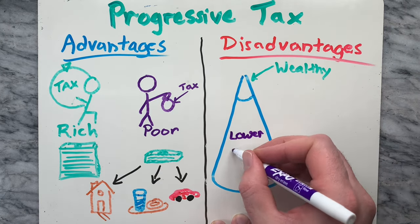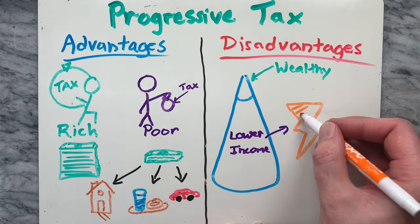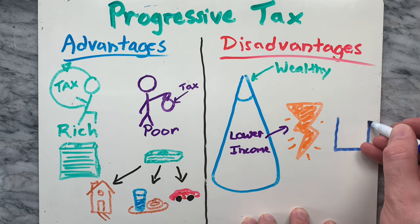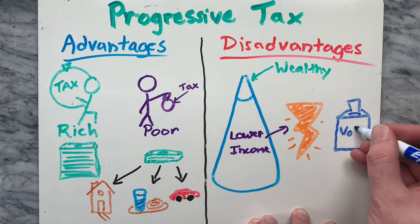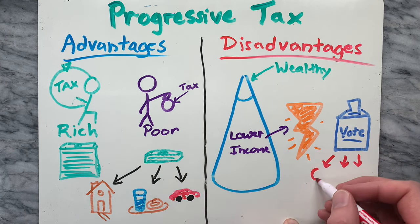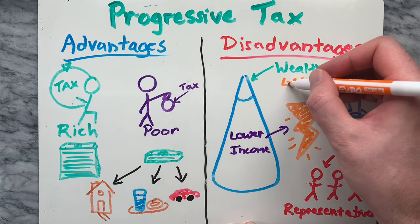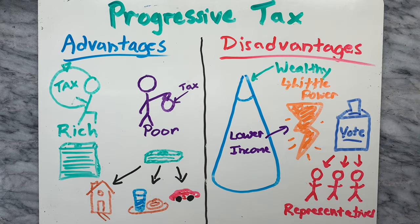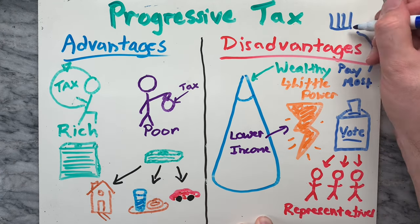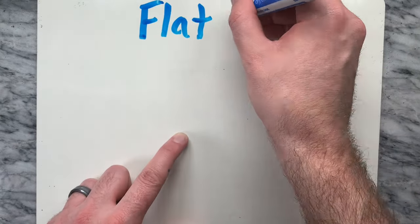Critics of progressive taxes point out that very few people are extremely wealthy, and the majority of people who have the power to put representatives in the government are in the lower economic category. Thus the wealthy pay more taxes that fund a large portion of the government, however their representation is limited in influencing policies and electing officials within the government.